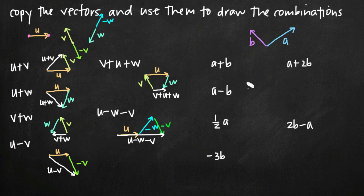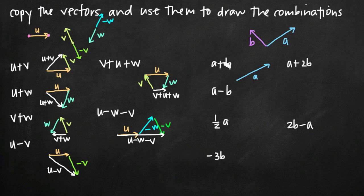Now a quick example with vectors a and b, which have the same initial point. Just because two vectors share an initial point doesn't mean anything special — we follow the same process of attaching the initial point of the second vector to the terminal point of the first. For a plus b, we draw a, then attach b to its terminal point. So a plus b is that resulting vector.